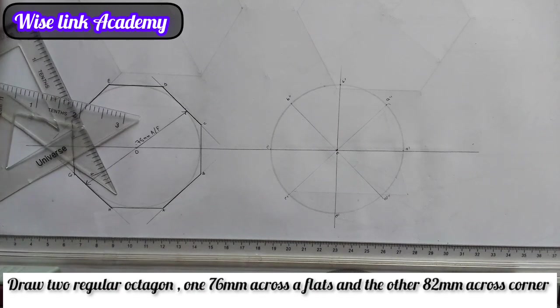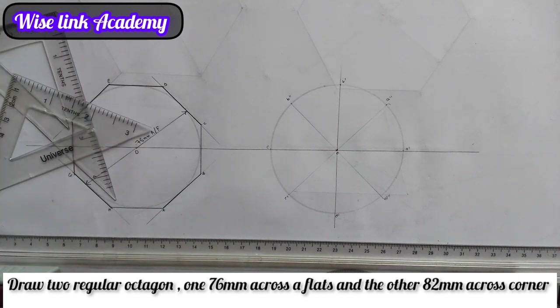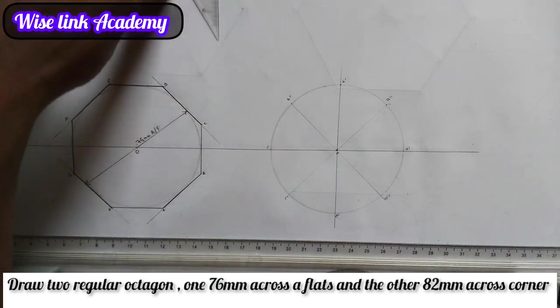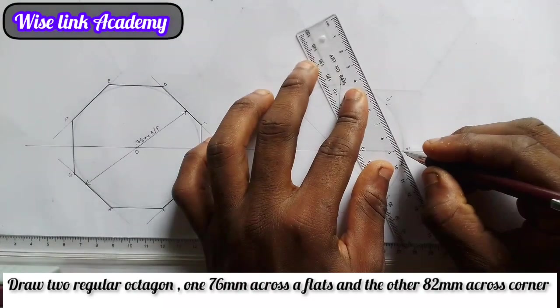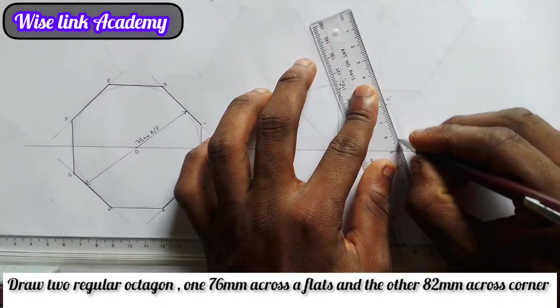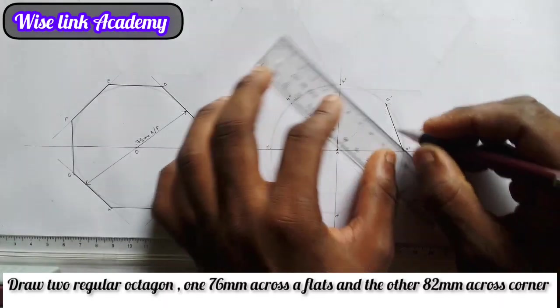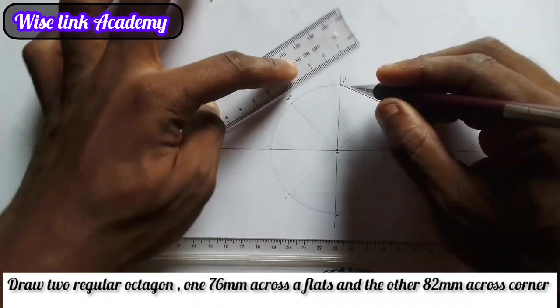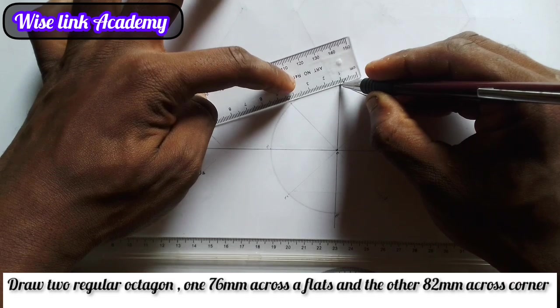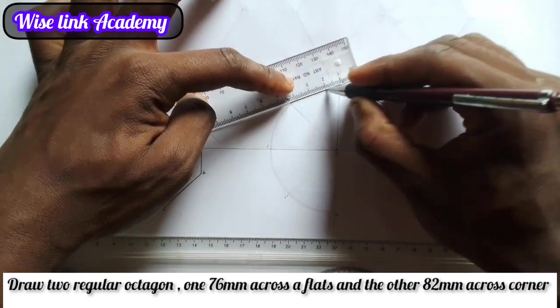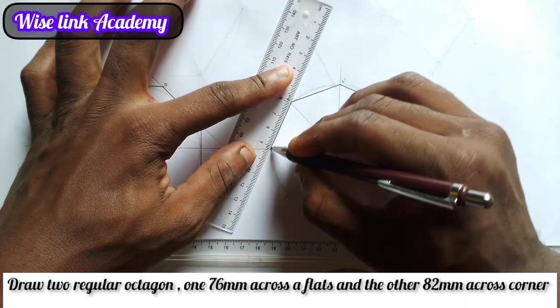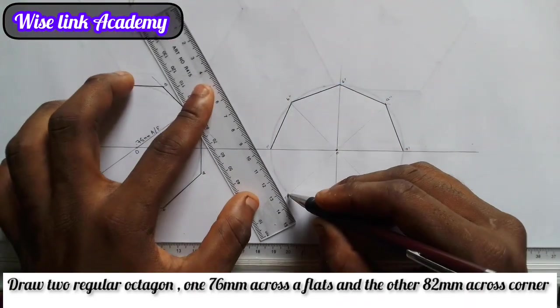Now I will take my metal ruler to connect all those points together. I'll take my metal rule and connect A prime to A double prime. Next up, A double prime to B prime. Next up, B prime to B double prime. I have this. Next up, B prime to C double prime, C prime, C double prime.